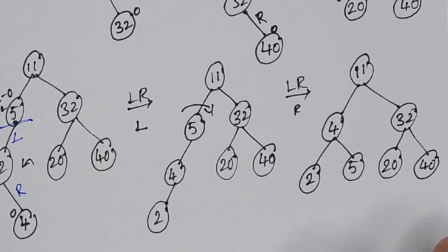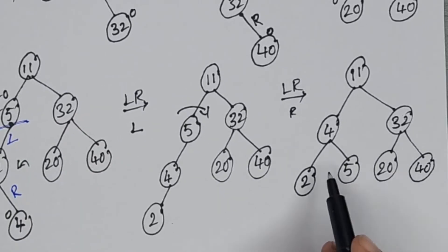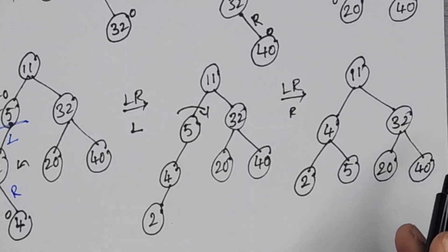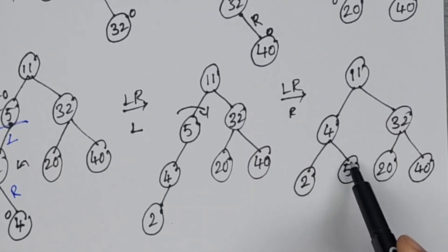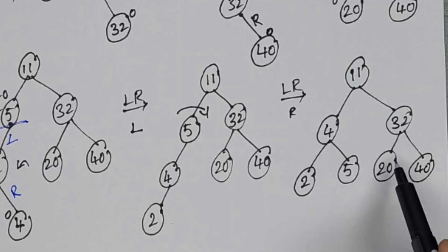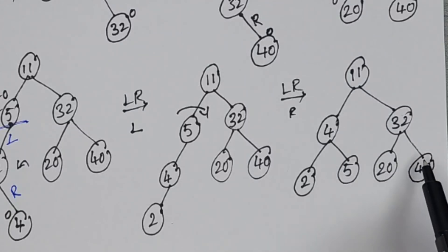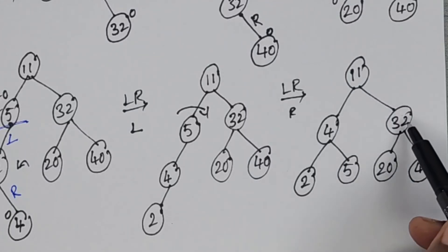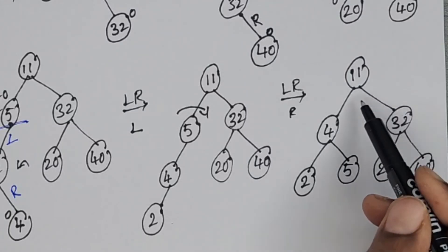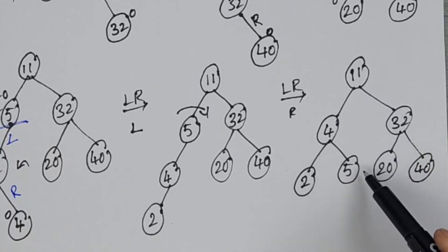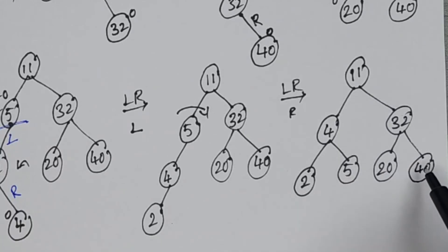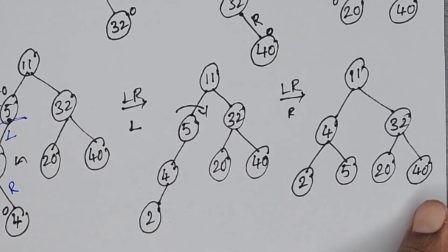After the LR rotation, we write the balance factors. All leaf nodes have balance factor 0. The balance factor of 11 is also 0, with left subtree height 2 and right subtree height 2. The tree is balanced.